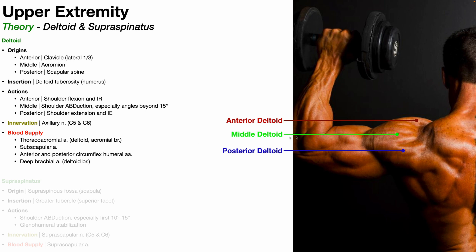For a surface anatomy approach: if the deltoid is hypertrophied enough and body fat percentage is low enough, you can make out three different regions of the deltoid. When the muscle is average-sized you won't see that, but when it hypertrophies enough, you can get a little demarcation between the three segments. Anteriorly is the anterior deltoid, in the middle is the middle deltoid, and posteriorly is the posterior deltoid.